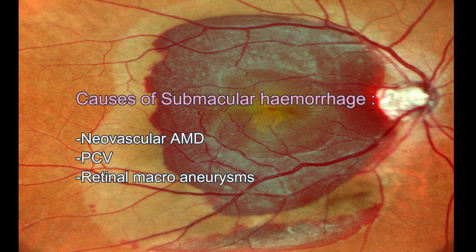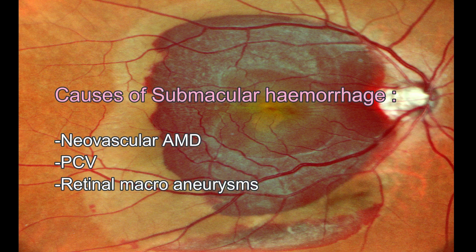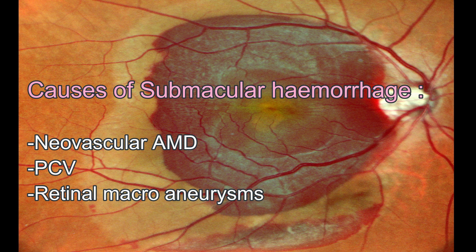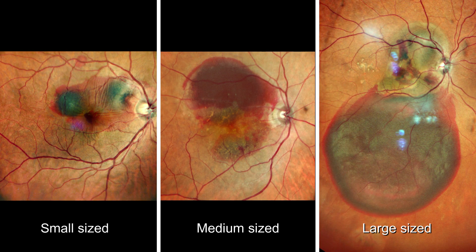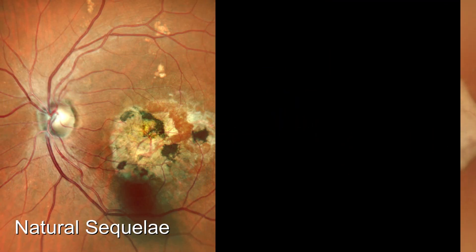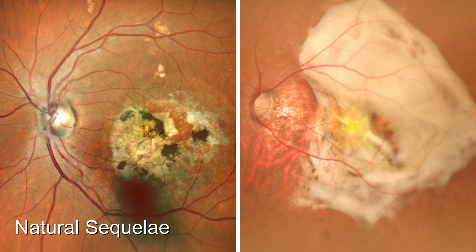Major causes of a submacular hemorrhage are neovascular age-related macular degeneration, polypoidal choroidal vasculopathy, and retinal macroaneurysms. These hemorrhages are broadly divided into small, medium, and large-sized clinically. Natural sequelae, when left untreated, includes macular scar and subretinal fibrosis.